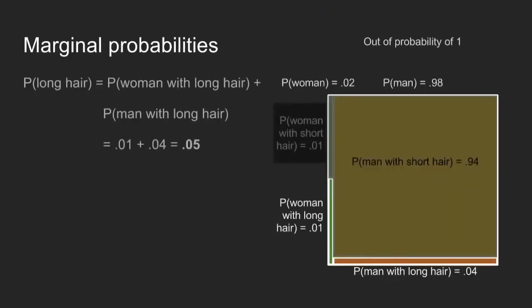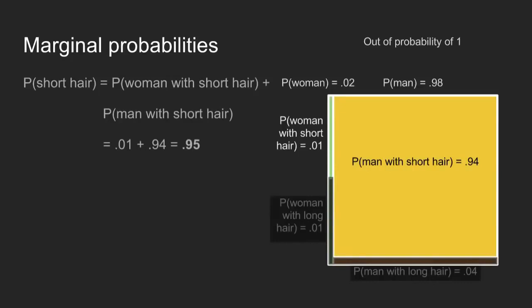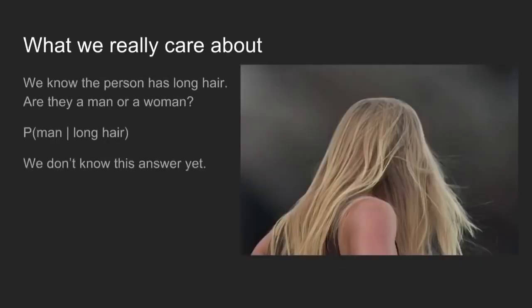Concept three: marginal probabilities. If I wanted to figure out the probability that someone has long hair, I just add up all of the different ways that someone can have long hair. They can be a woman with long hair or a man with long hair. In the men's restroom line, that's a 1% probability plus a 4% probability, or a 5% probability overall. And you can do the same thing for short hair: 95%. This last concept finishes our foundation. We can get to what we really care about.